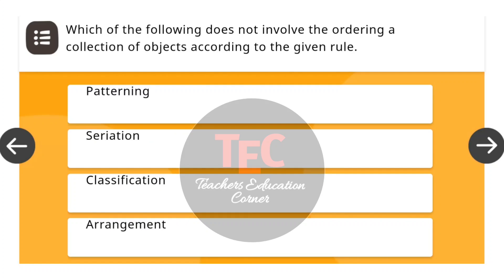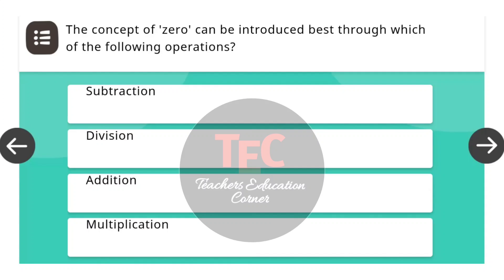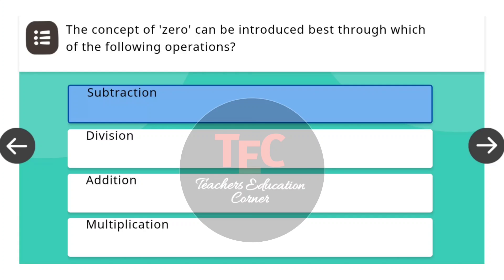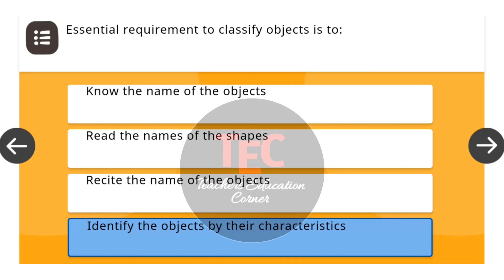Next question: Which of the following does not involve the ordering of a collection of objects according to the given rule? The correct answer is classification. Next question: The concept of zero can be introduced through which of the following operations? The correct answer is subtraction. Next question: Essential requirement to classify objects is — the correct answer is identify the objects by their characteristics.